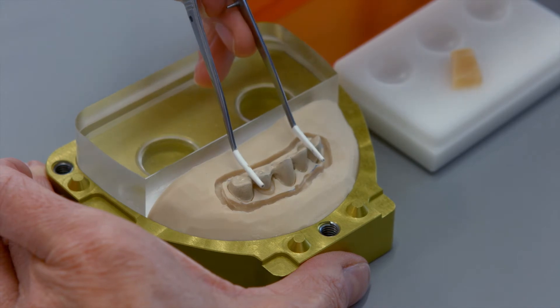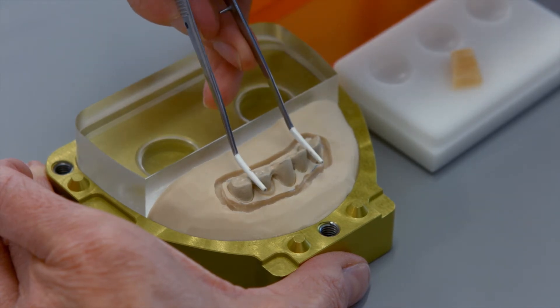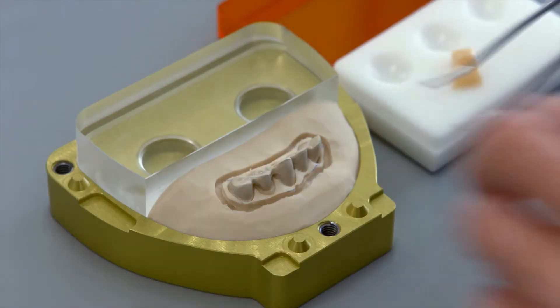Carefully place the framework on the silicone segment of the flask base and press it down lightly. Coated tweezers are suitable for this purpose.